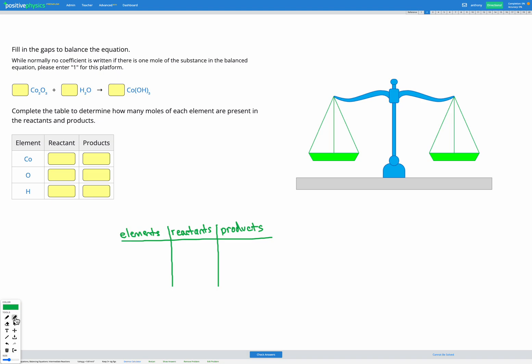In this question, we're again going to be balancing an equation. Here we have Co2O3, H2O, and Co(OH)3.